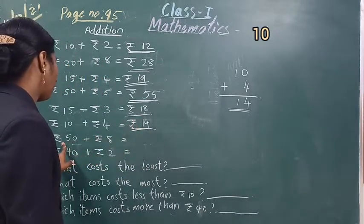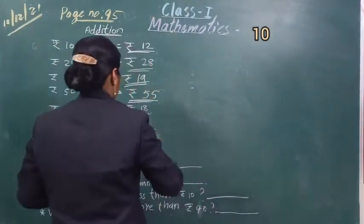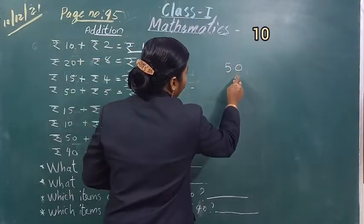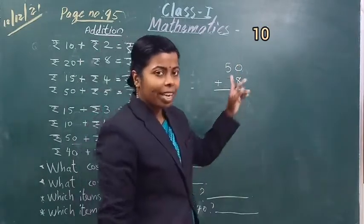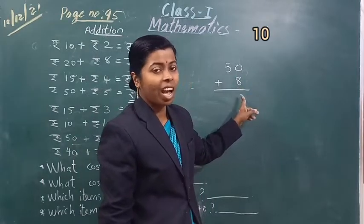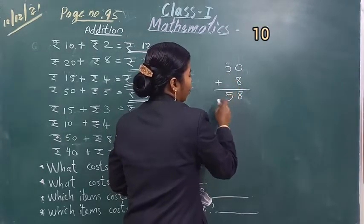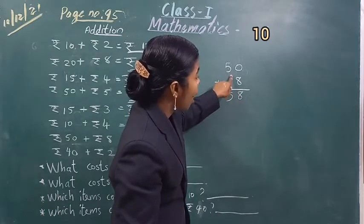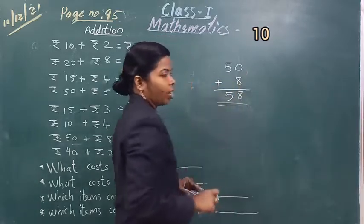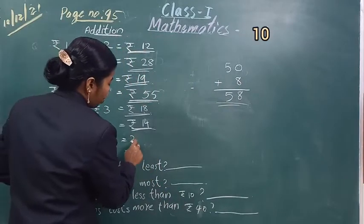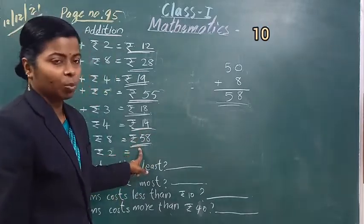Then next: रुपीज 50 plus रुपीज 8. Fifty plus 8. 0 plus 8 — zero में कुछ भी नहीं है, so answer is 8. Then here five — इस five के साथ add करने के लिए कुछ भी नहीं है, इसे ऐसे ही निकाल के लिखना. 50 plus 8 is equal to 58. 58 रुपीज. समझ में आया?